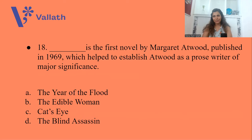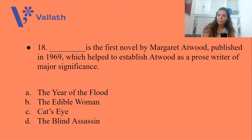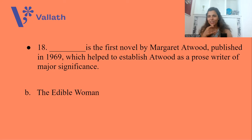Question number eighteen: Which is the first novel by Margaret Atwood, published in 1969, which helped establish Atwood as a prose writer of major significance? A. The Year of the Flood, B. The Edible Woman, C. Cat's Eye, or D. The Blind Assassin. The answer is option B, The Edible Woman. I have not covered The Edible Woman, but it is an important work — kindly read it.